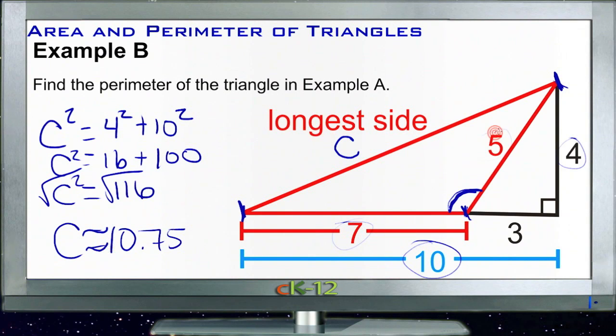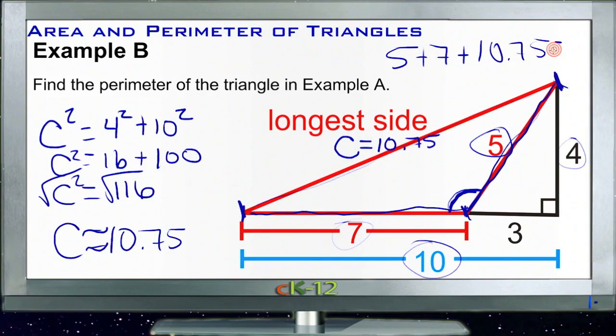So now we can find a perimeter. Our perimeter is going to be five units this way, and seven units this way. So five plus seven plus, and then c up here was ten point seven five. So ten more units, ten and three quarters units this way. Well five and seven is twelve, plus ten point seven five is going to be twenty-two point seven five units.